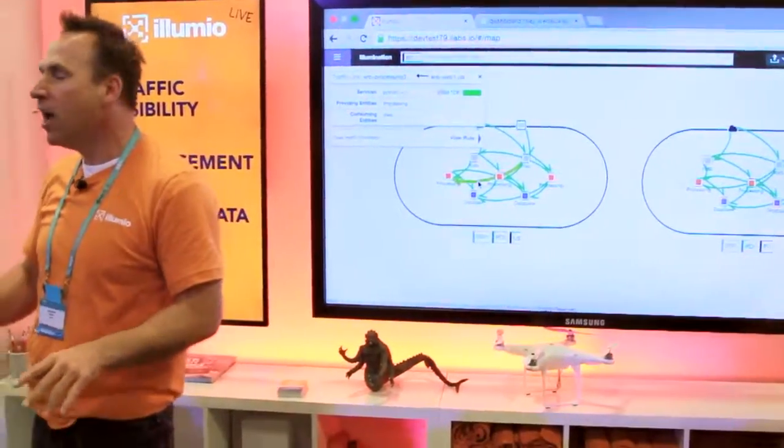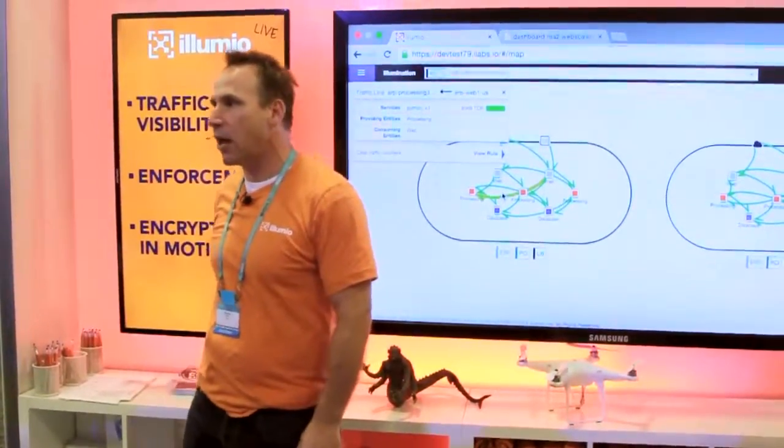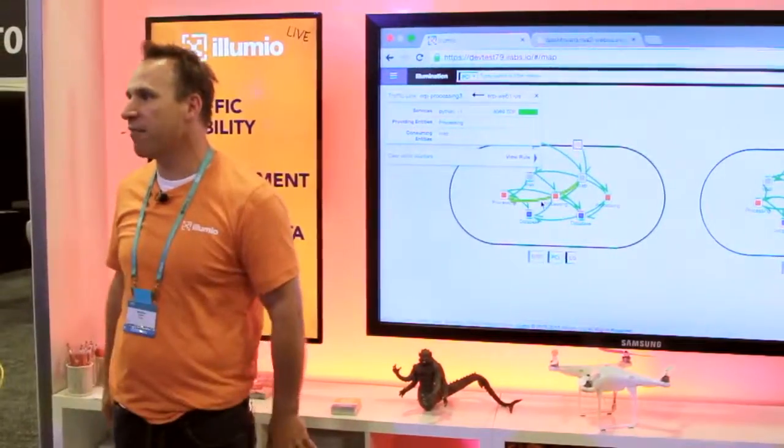So we're visualizing the application topology and that satisfies DSS 1.0 for PCI. Boom. Getting off the bus. Done.